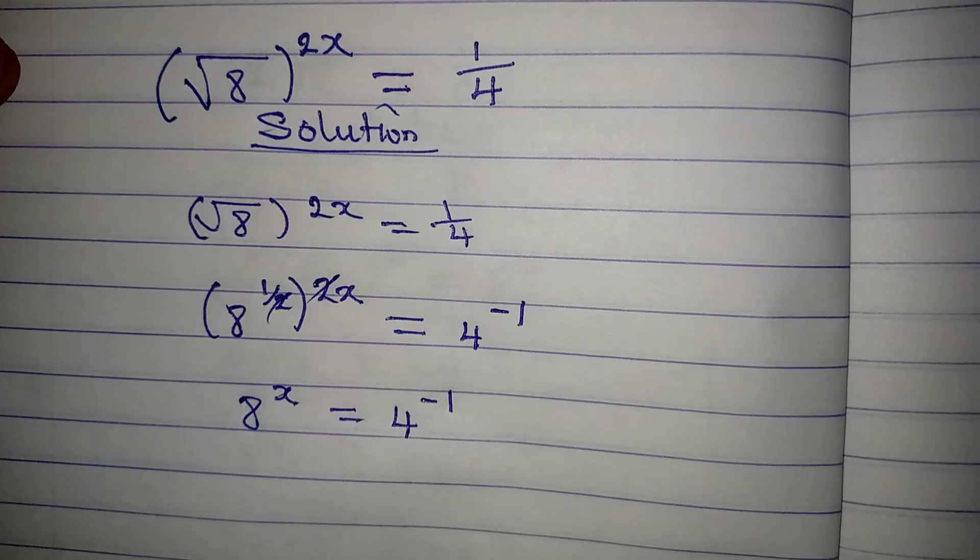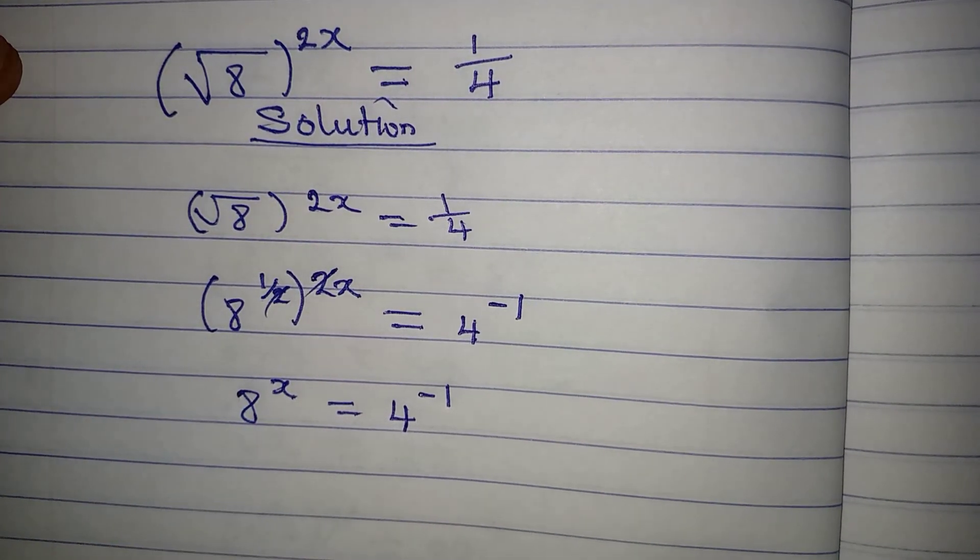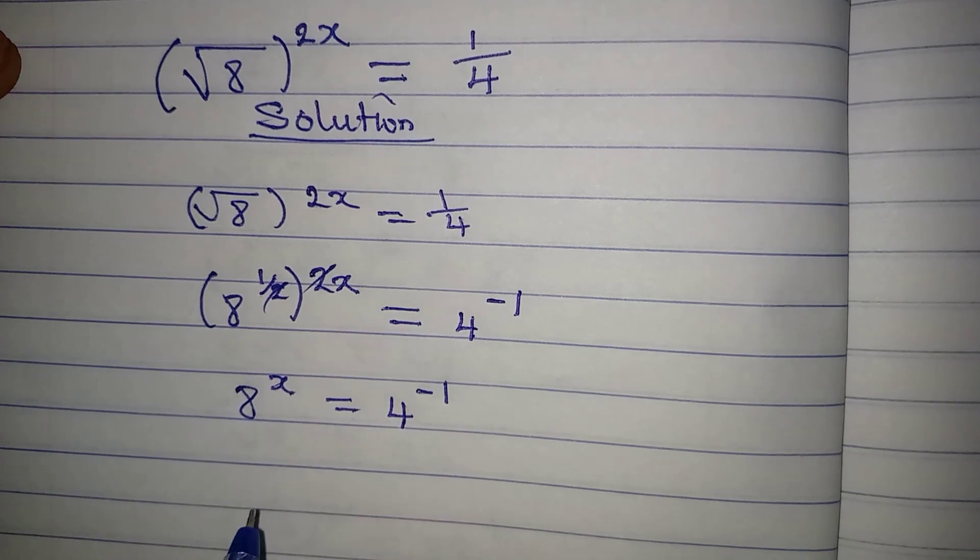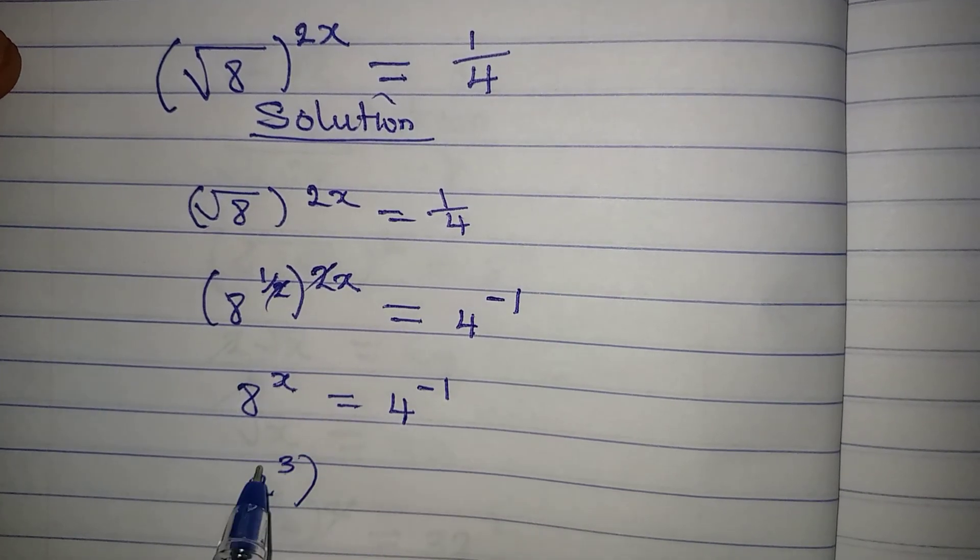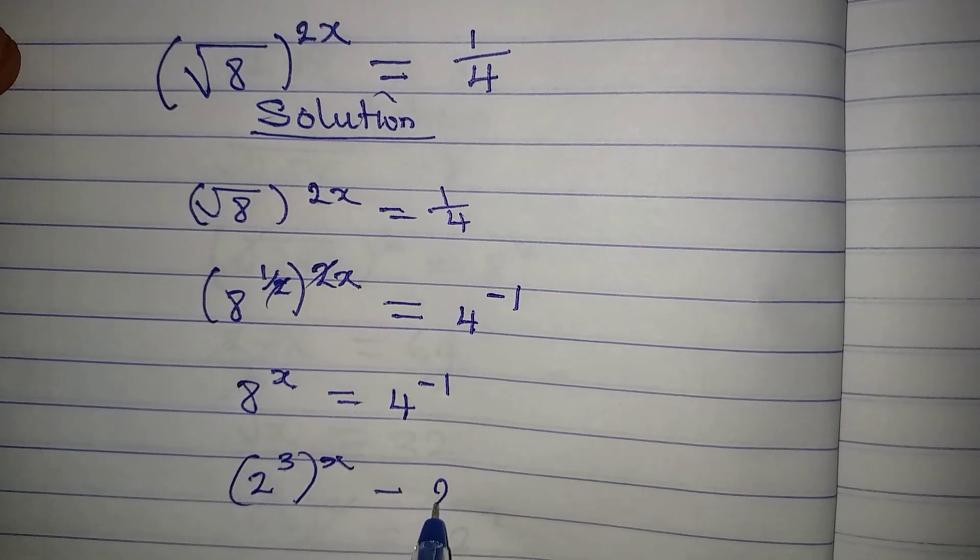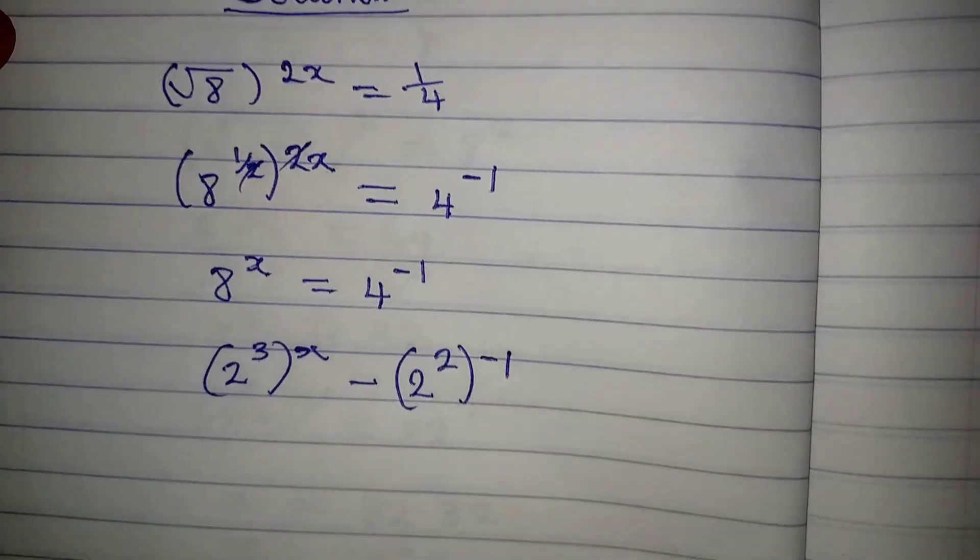And then if you still agree to this extent, then let's make sure they have the same base. 8 is 2 to the power of 3, then we have x on the outside, then 4 is 2 to the power of 2, and we have negative 1 on the outside.